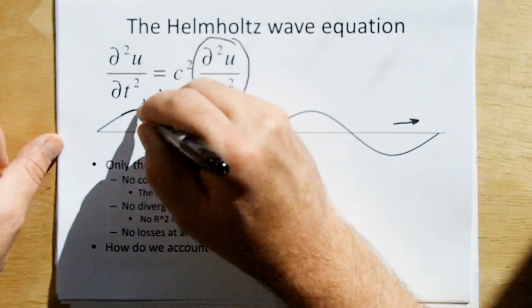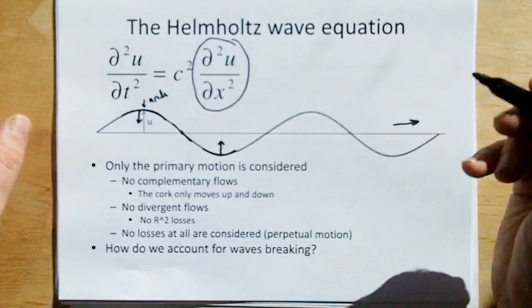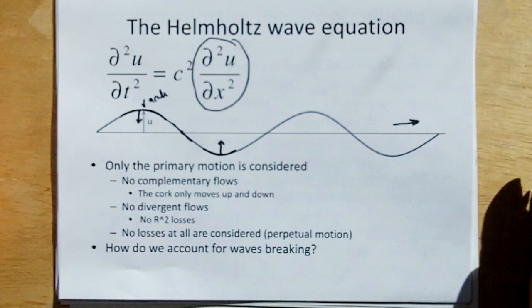Here, where the curvature of the water, you have acceleration of the water upward. So this very, very simple model only, only, only considers the motion, the primary motion. It does not consider complementary motion. It does not consider divergent flow either.